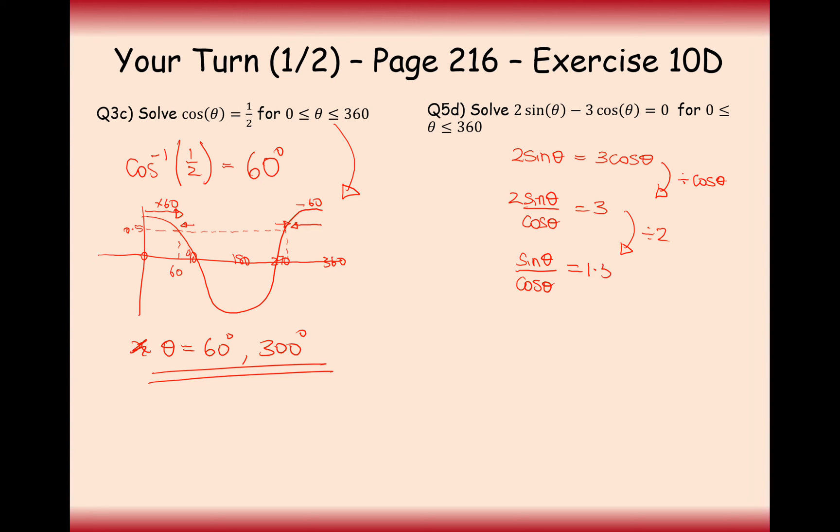And now what I need to do is change this sine theta over cos theta into a tan theta. So tan theta of 1.5, or tan theta equals 1.5 here. So now the next thing I need to do is do tan minus 1 of 1.5. And I don't know the answer to that. I'll have to grab my calculator and get 56.3 degrees.